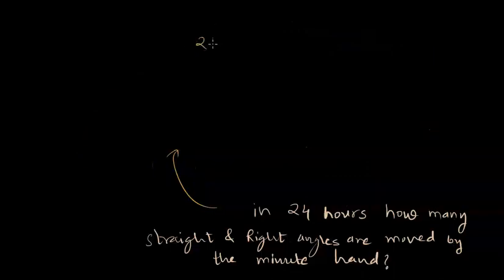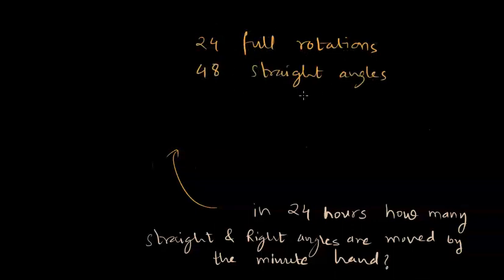So in 24 hours there are 24 full rotations, and we know that one full rotation is worth two straight angles. So 48 straight angles are moved by the minute hand, and since one straight angle includes two right angles,